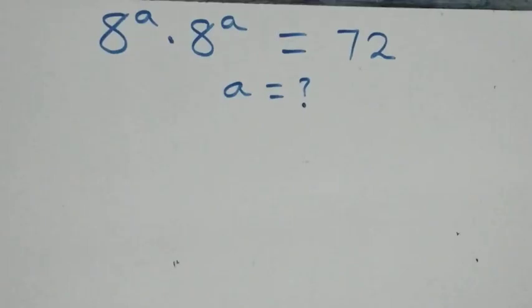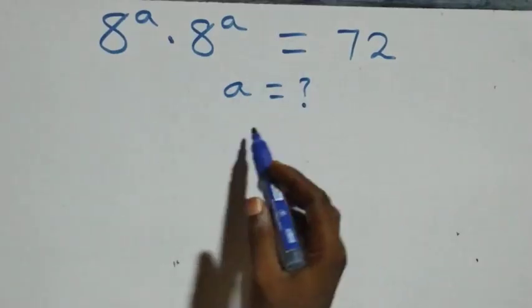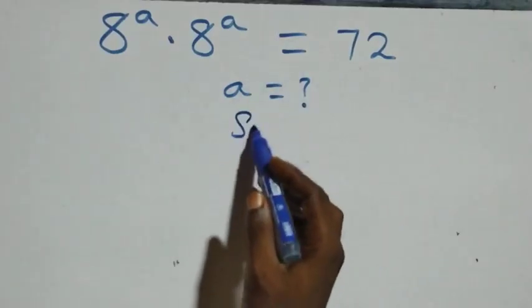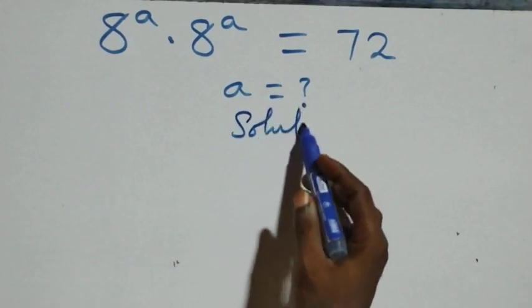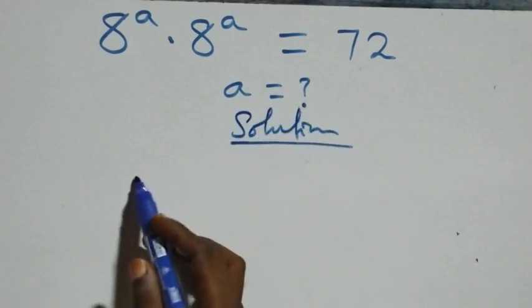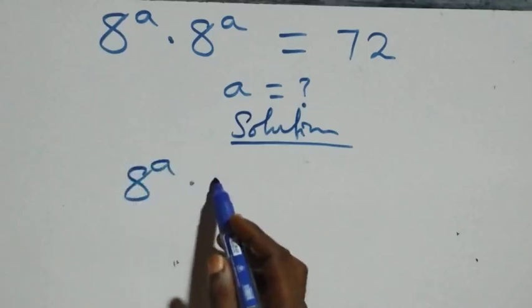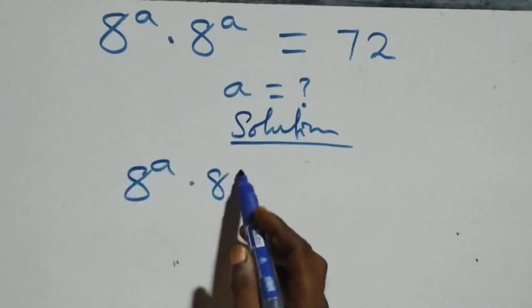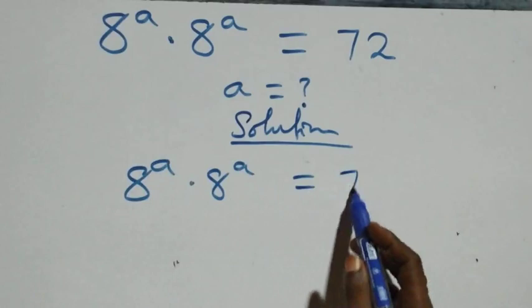How to solve this nice exponential equation. What we have here is 8 raised to power a times 8 raised to power a equals 72.